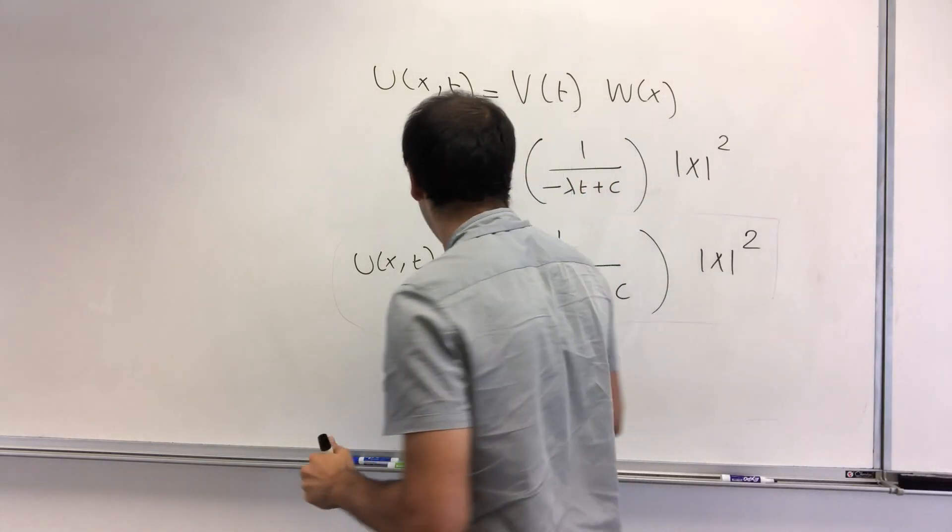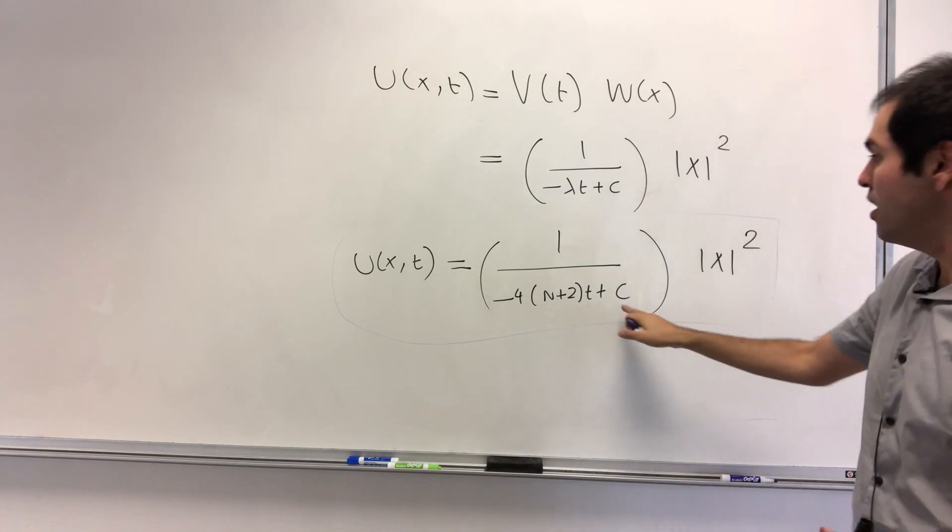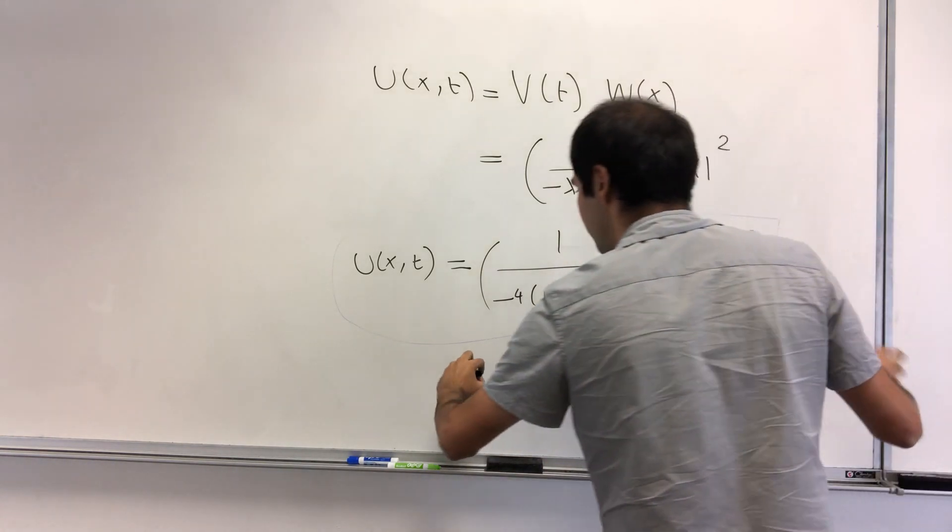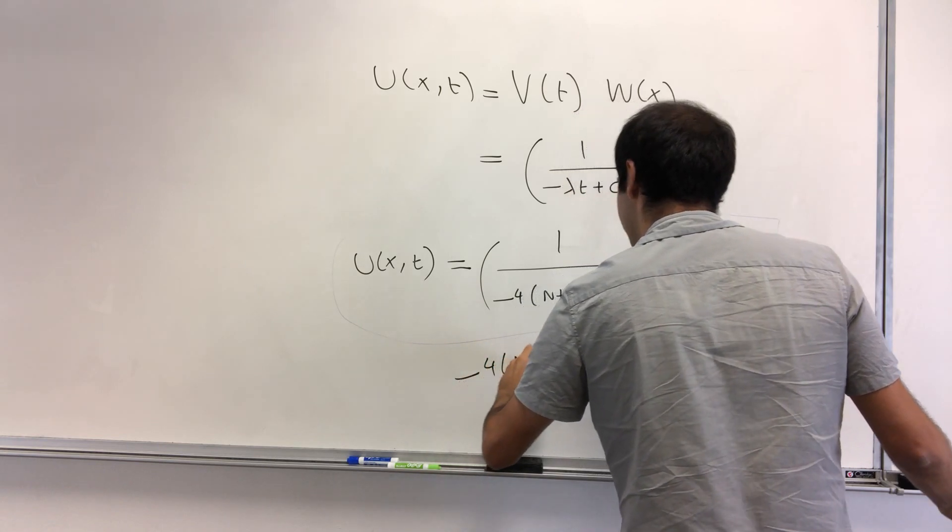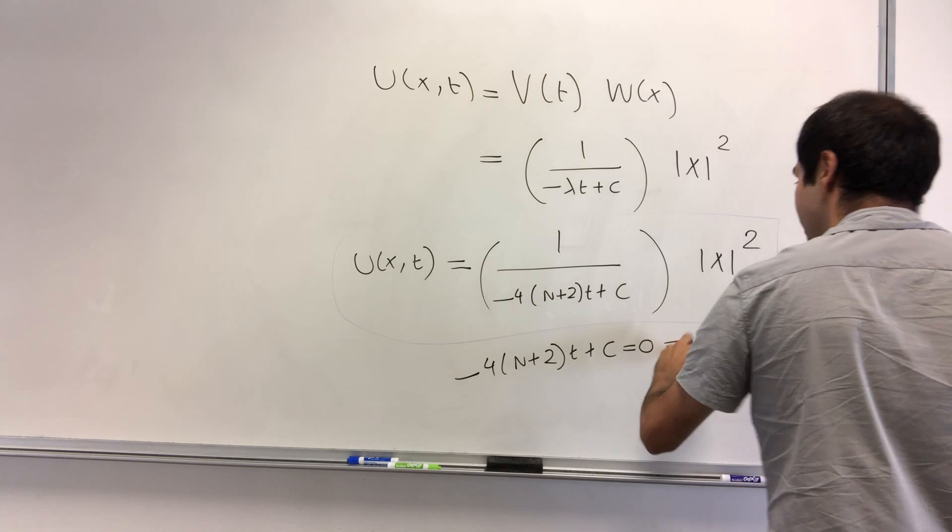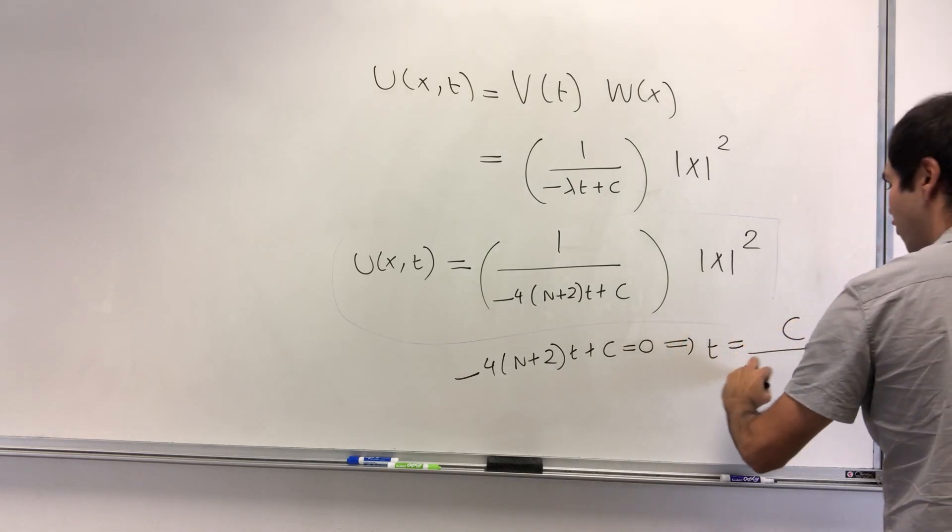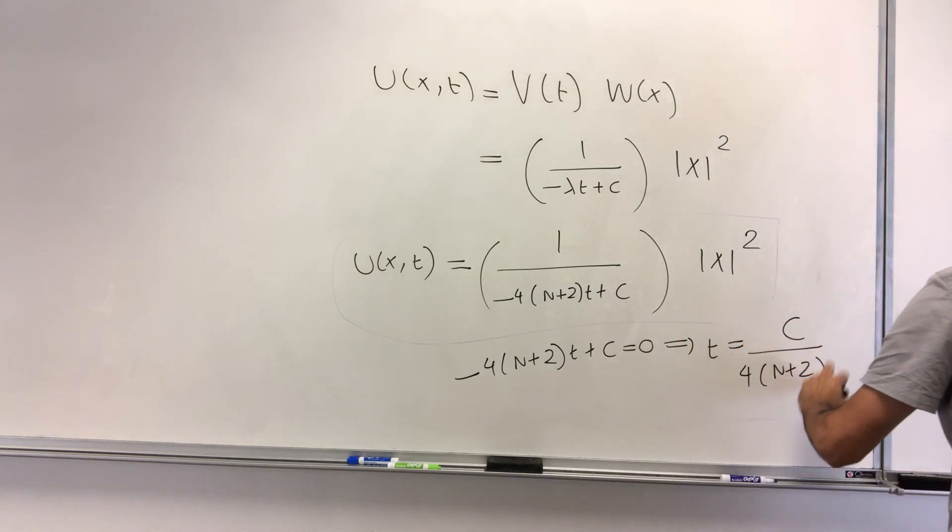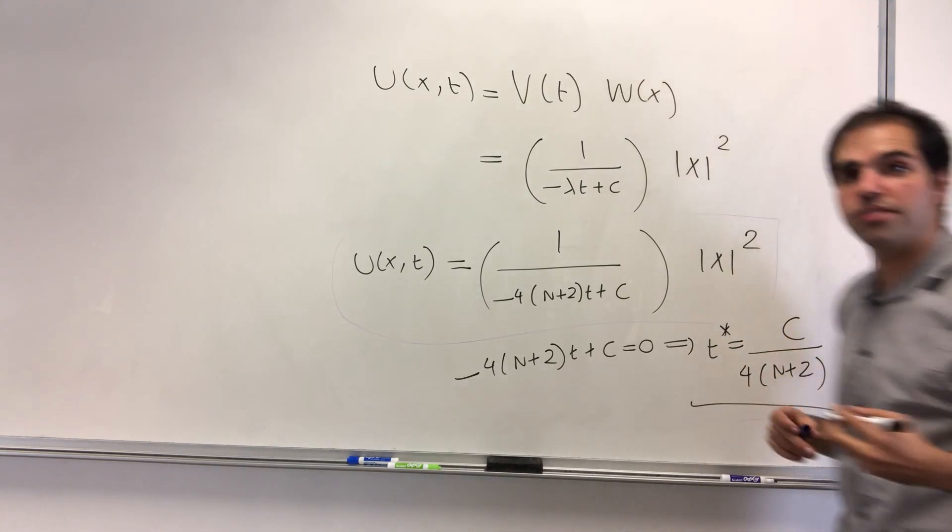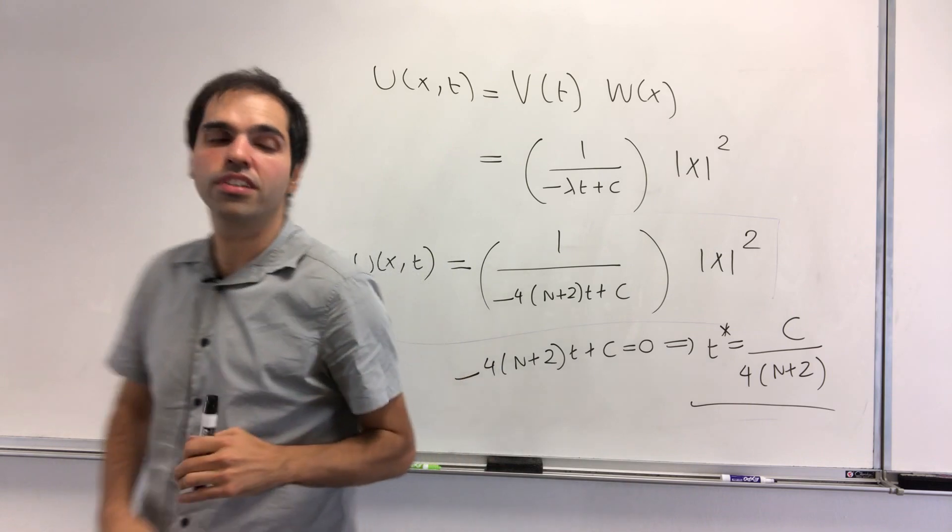Because remember, it models heat flow, and in particular, this denominator can be 0 in finite time. Because if we have minus 4 times n plus 2t plus c equals 0, that gives you t equals c over 4 times n plus 2. That's sometimes called t star.